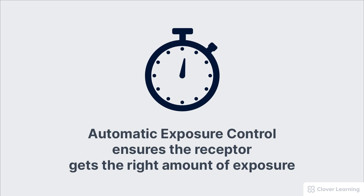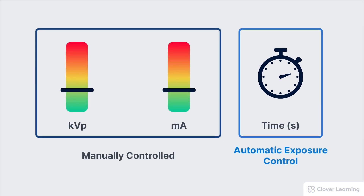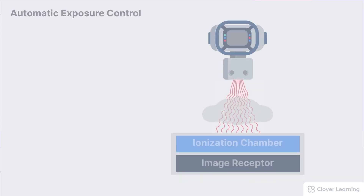The name automatic exposure control tells us exactly what it does — it makes sure the receptor gets exactly the right amount of exposure. During a procedure, the kVp and the mA are set by the operator, but the AEC system sets the exposure time and therefore controls the total mAs.